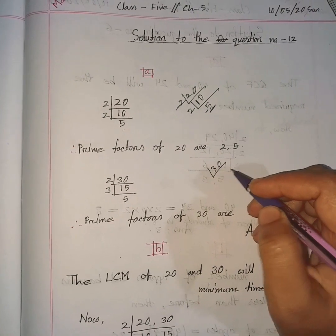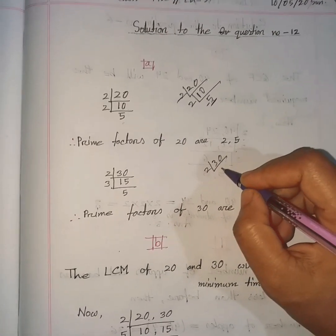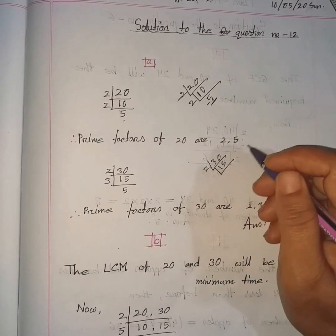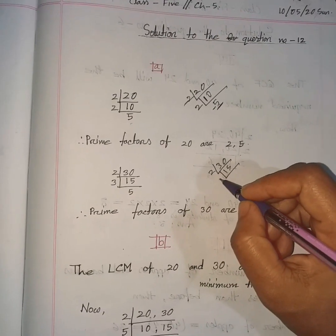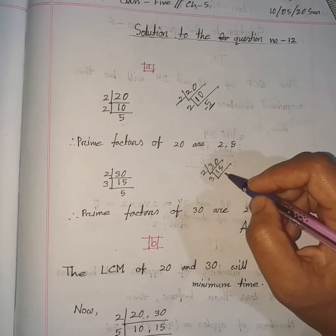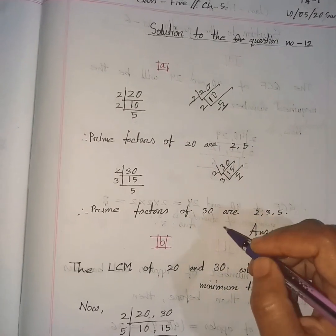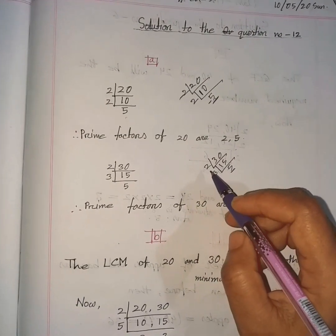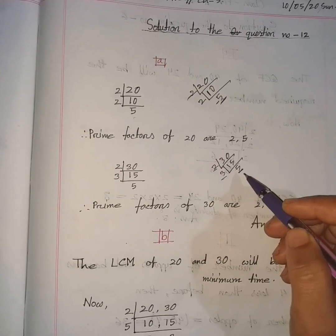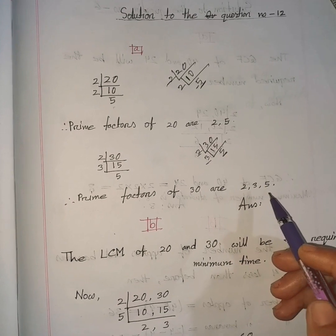Now for 30: obviously 30 is an even number, so we divide it by 2. Dividing 30 by 2, we get 15. And 15 is an odd number, so we cannot divide it by 2. We can divide it by 3. Dividing 15 by 3, we get 5. And 5 is a prime number. So we get 3 prime factors of 30: 2, 3, and 5. Therefore, prime factors of 30 are 2, 3, and 5.